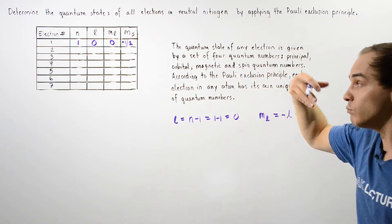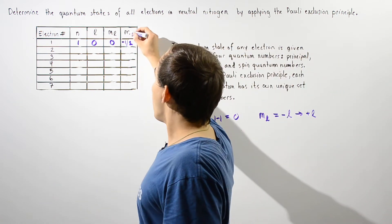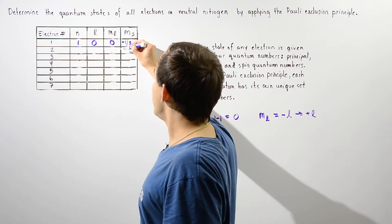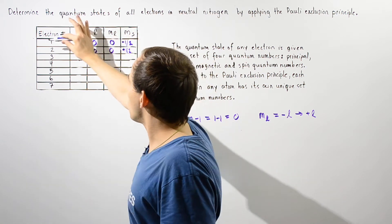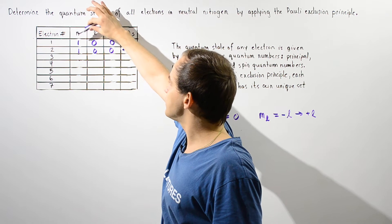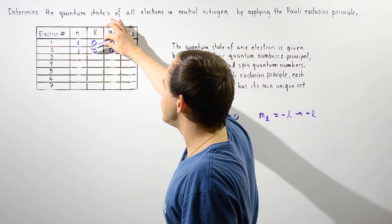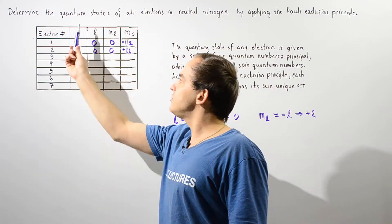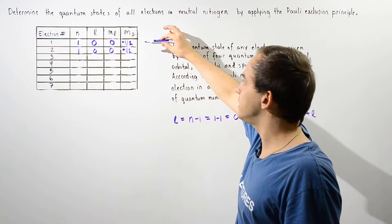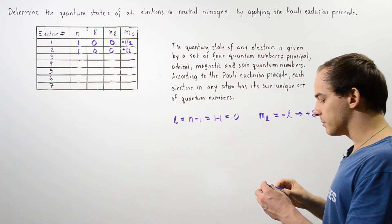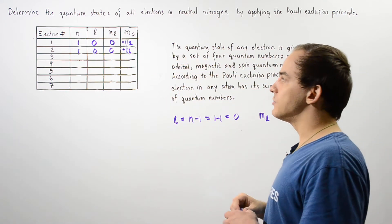By the Pauli exclusion principle, this is a single S orbital with principal quantum number n equals 1, and we can fit one more electron into that orbital. All that changes for the second electron is the spin becomes positive one-half. So the quantum state of electron 1 is (1, 0, 0, -1/2) and the quantum state of electron 2 is (1, 0, 0, +1/2). These states are unique because they differ by their spin quantum numbers.